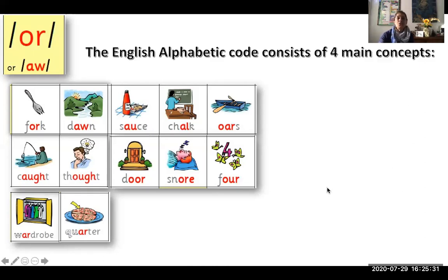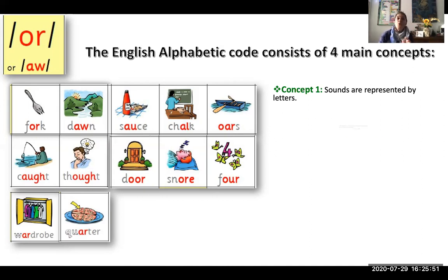Well, this happens because the English alphabetic code consists of four main concepts. Concept number one: One sound or phoneme is represented by one grapheme. So sounds are represented by letters.